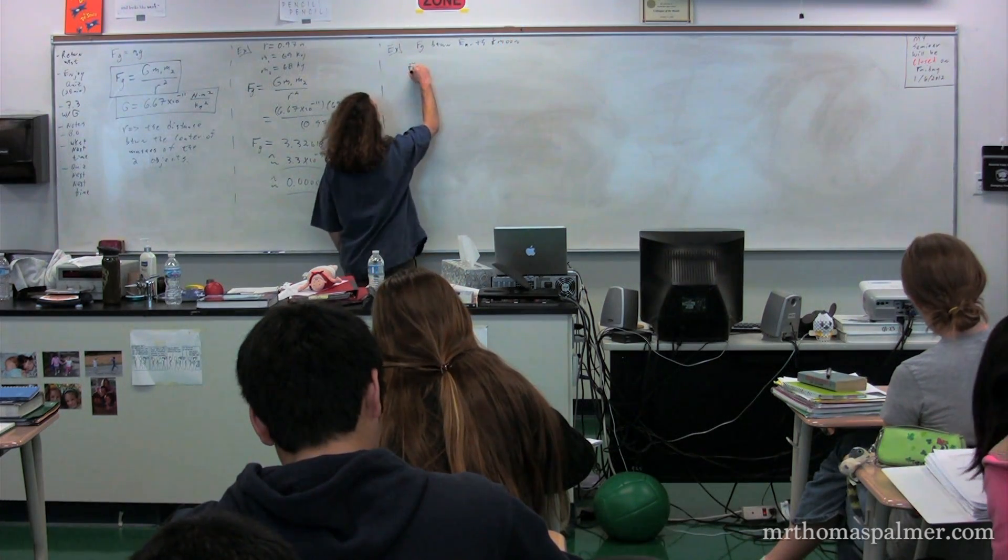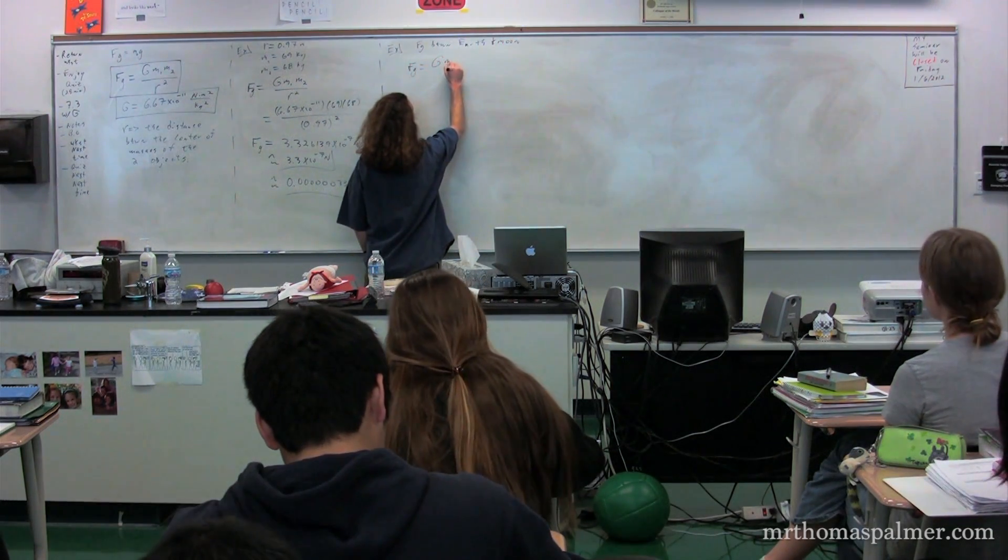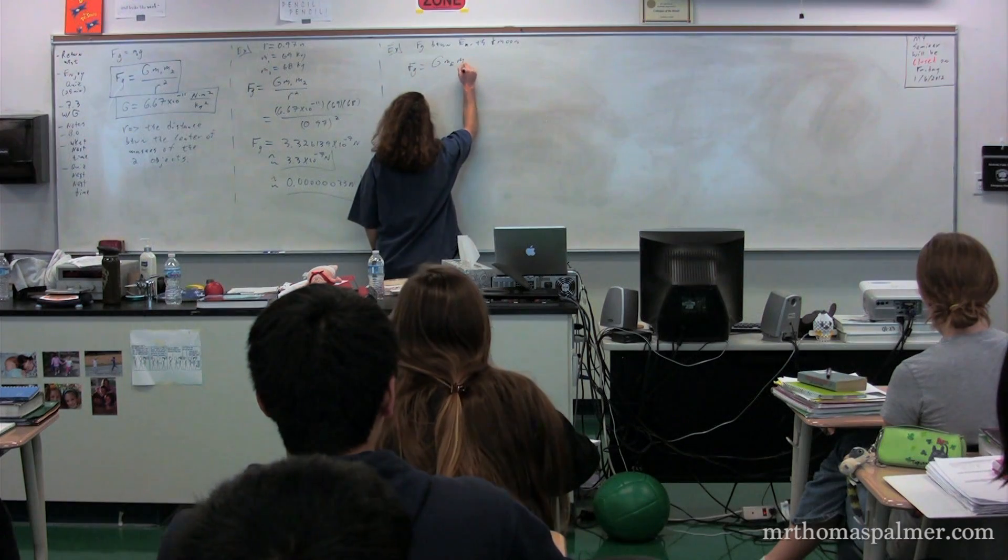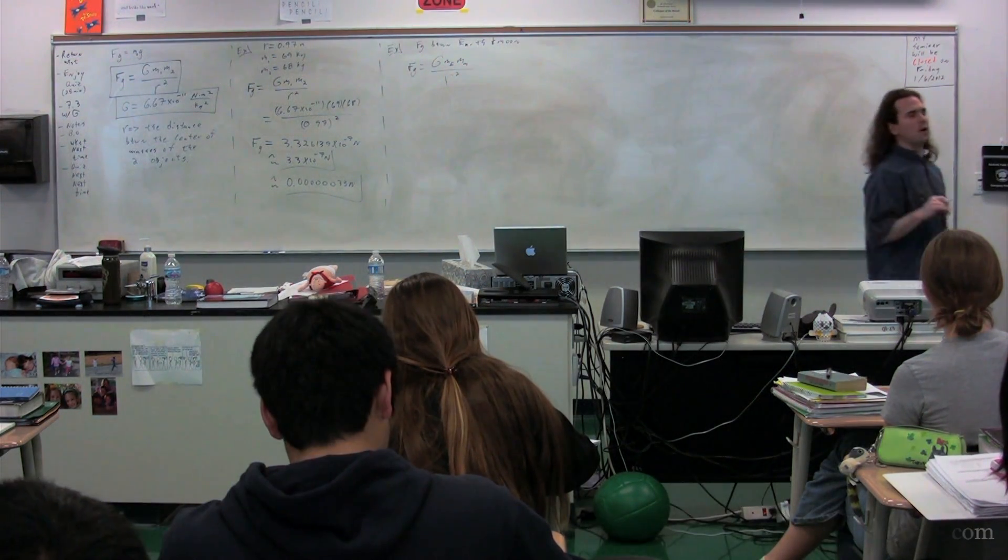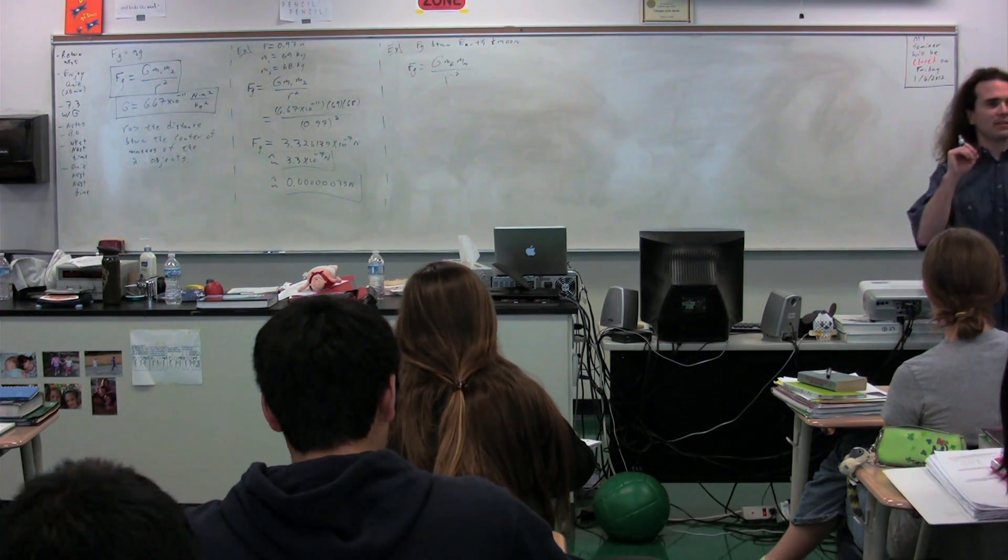So, the force of gravity, then, is going to be equal to big G times the mass of the Earth times the mass of the Moon divided by r squared. Now, r in this equation, Danaher, is specifically what?